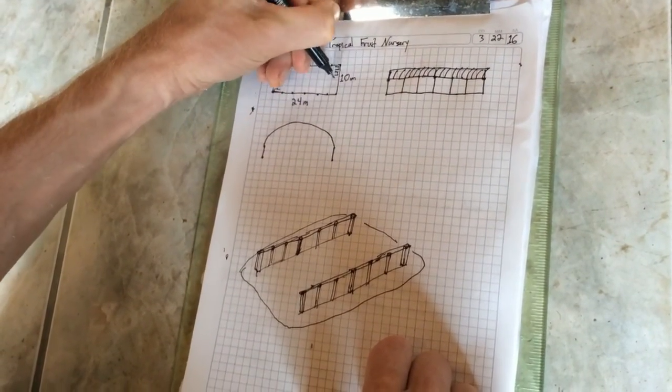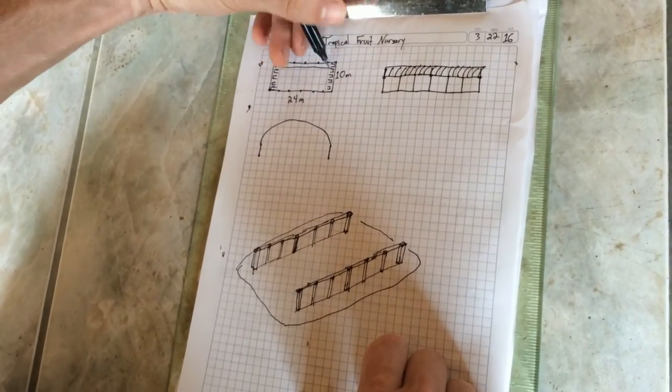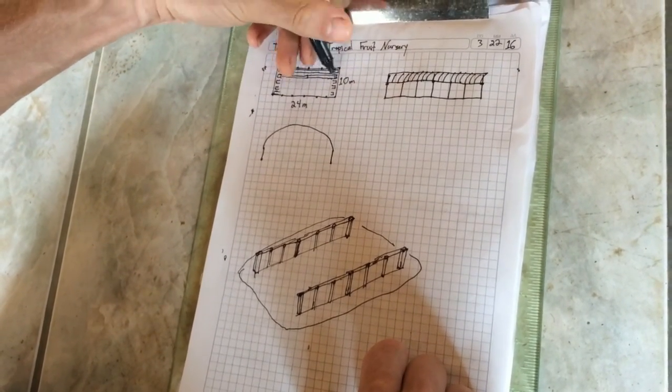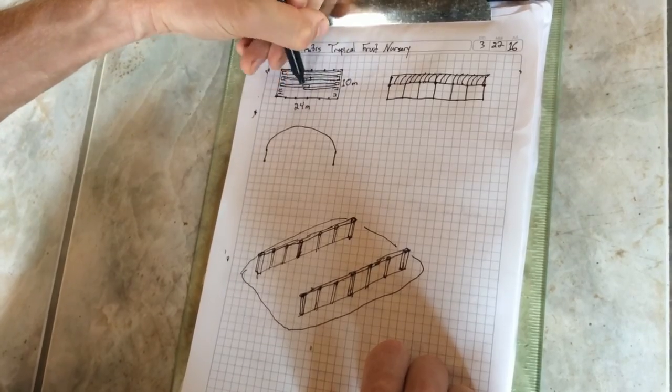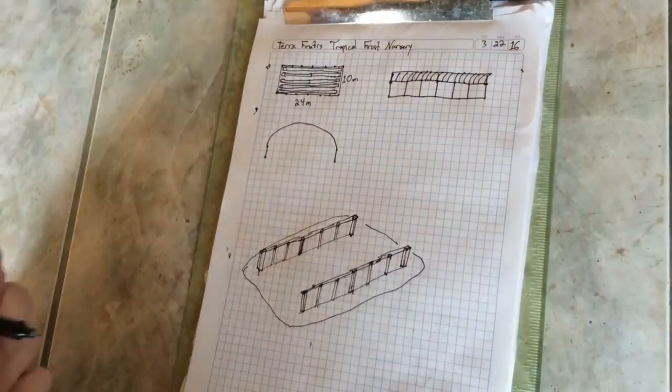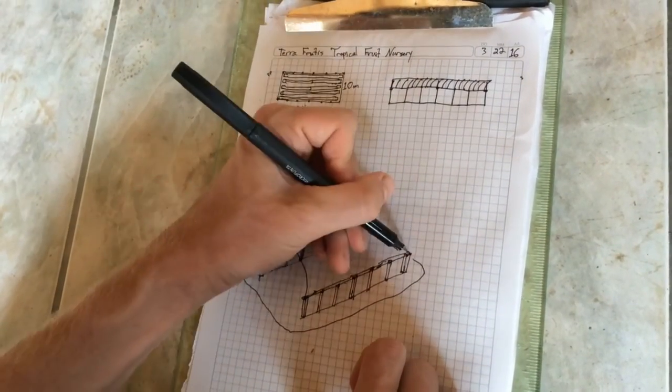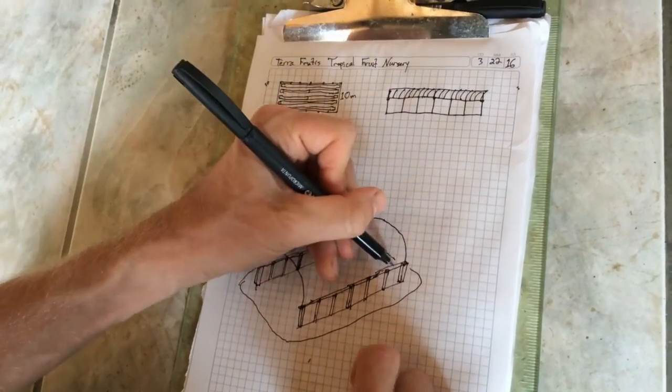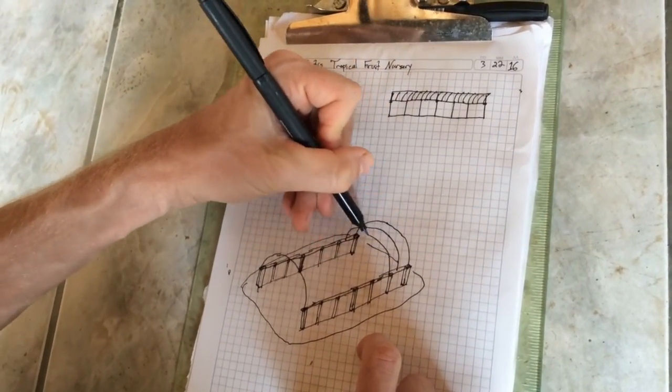Then we're going to dump about 10 or 15 centimeters high of gravel under the whole thing to raise the floor up so it doesn't flood. We're going to have room for five rows of tables that are 24 meters long, 1 meter wide, quite a few plants.